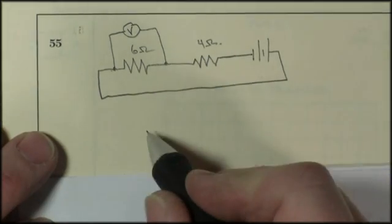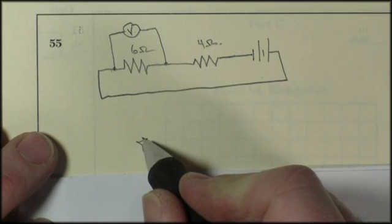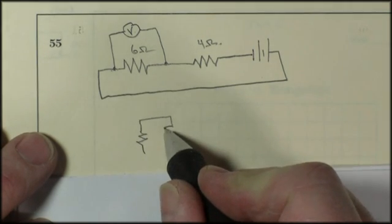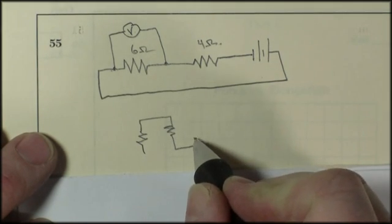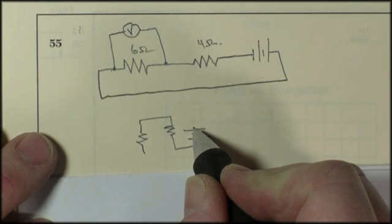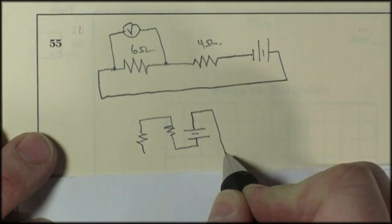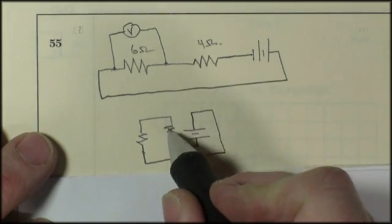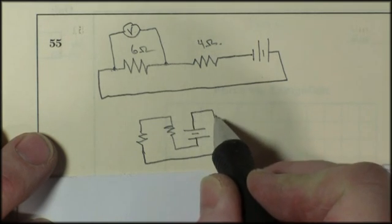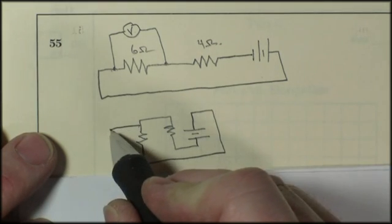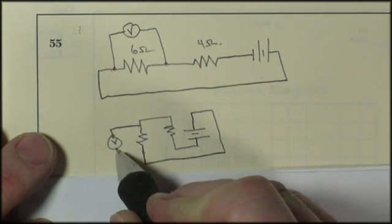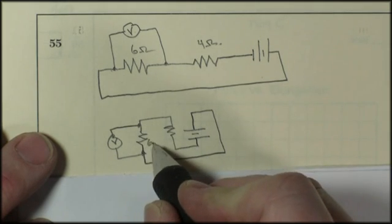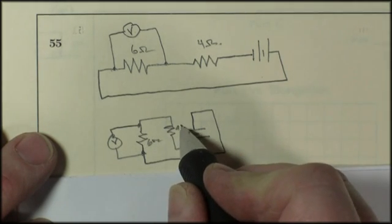There's a lot of ways you could have done it. This way kind of draws it in a kind of a parallel where the things are parallel to each other. But in fact, it's a series circuit. Because there's only one path. Keep in mind the voltmeter is not part of a circuit. 6 ohms, 4 ohms.